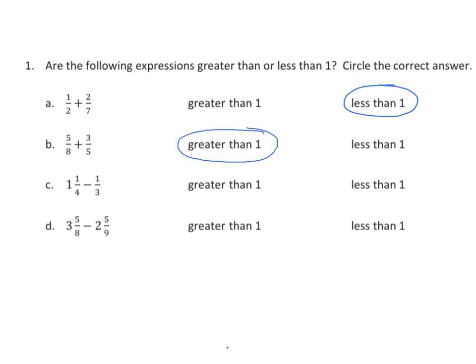Now we have some subtraction. We have 1 and 1 fourth minus 1 third. I know that 1 third is greater than 1 fourth, so if I subtract 1 and 1 fourth minus 1 third, my difference is going to be less than 1.